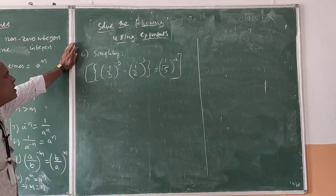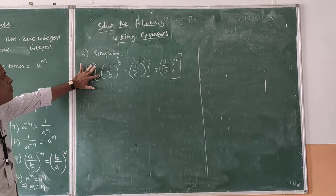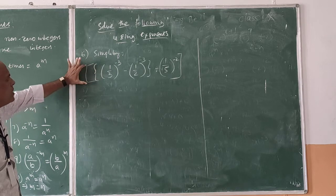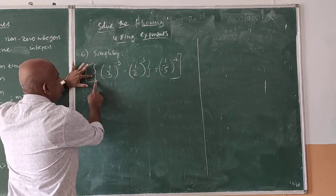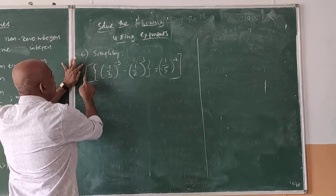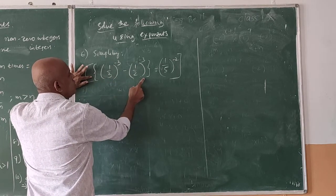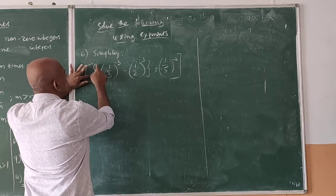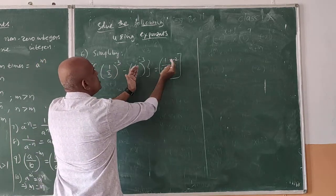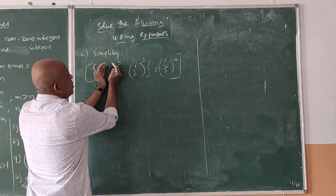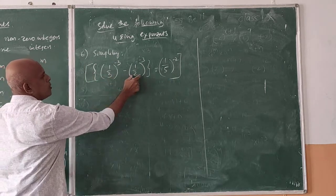Now coming to the 6th problem. There are 3 types of brackets: square brackets, curly brackets, and small brackets. We have to simplify the small brackets first, then the flower/curly brackets, and finally the square brackets. The expression involves three terms inside a square bracket, with a flower bracket around two of the terms.